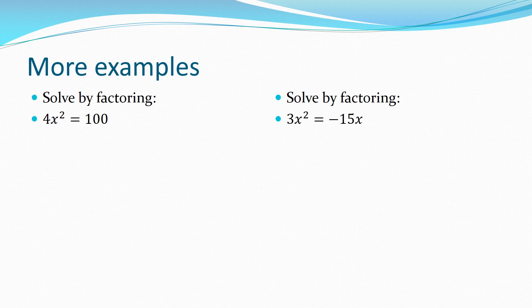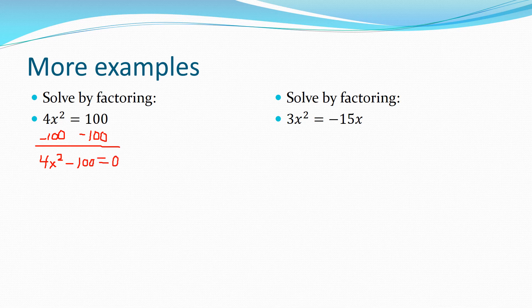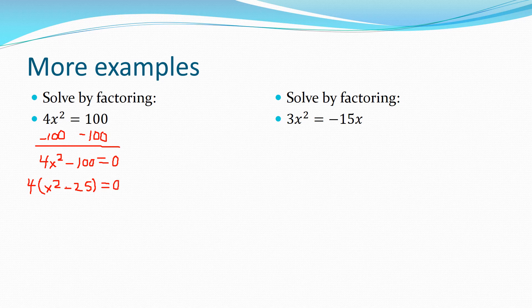Here are some examples for you to do — pause the video to give yourself a chance. For the example on the left, I subtract 100 from both sides and get 4x squared minus 100 equals zero. I see a GCF of 4 in 4x squared and 100, so I take out a 4 and I'm left with x squared minus 25 inside the parentheses equals zero. I can factor further — x squared minus 25 is the difference of two perfect squares.